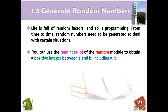Everybody can guess the number, so we need a range. You can use `randint` — it is a function of the random module, so we have to import the random module first. `randint` takes two parameters, a and b. It returns a random integer from a to b, including both a and b.